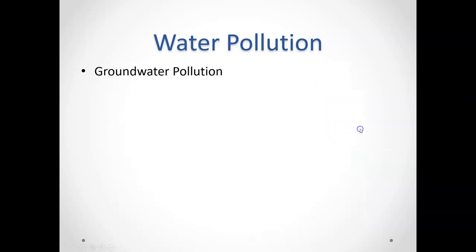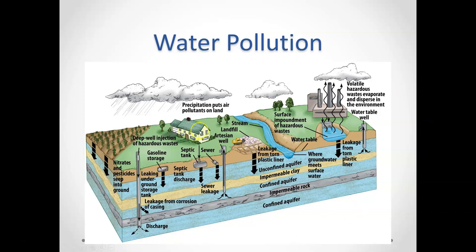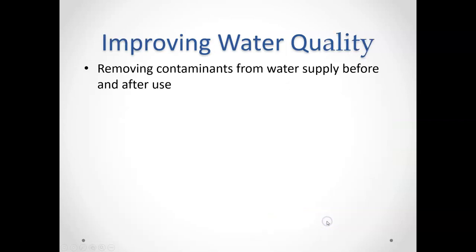Nonpoint source pollution is more difficult to identify and can come from streets, sidewalks, driveways, yards, and all kinds of places. Everything gets collectively picked up by rainwater, which runs into storm drains that then empty into a nearby body of water. Groundwater is also at risk — pesticides and fertilizers can seep into groundwater the same way they run off into lakes and streams, polluting both surface and ground sources.